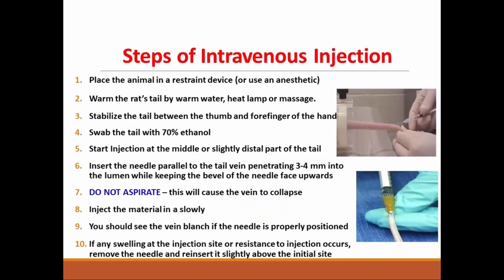Steps of intravenous injection in rat or mouse. Place the animal in a restrainer or use anesthesia. Warm the rat tail using warm water, a heat lamp, or by massage, so as to help venous engorgement — the lateral vein of the tail will be congested and clearly visible and easily accessed.